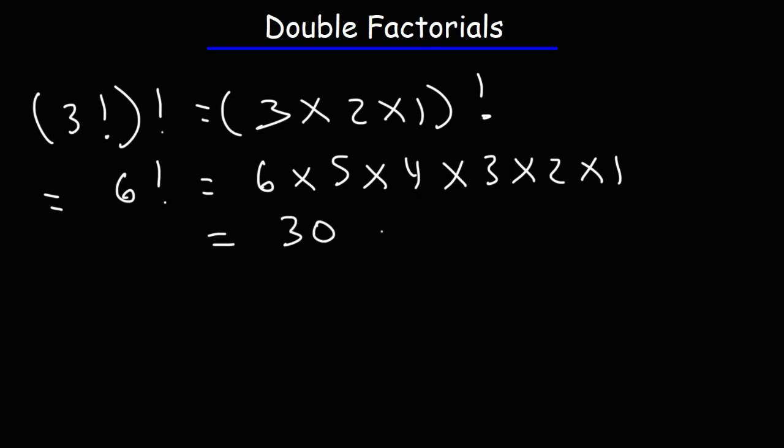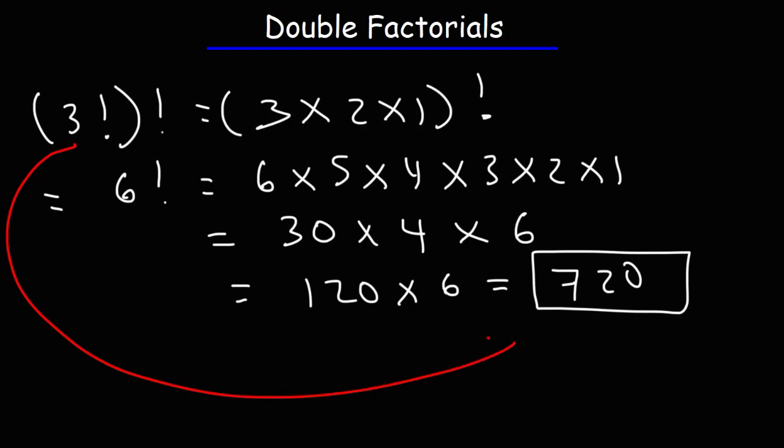6 times 5 is 30. 3 times 2 is 6. 30 times 4 is 120. And 120 times 6. 12 times 6 is 72. So 120 times 6 is going to be 720. So that's the value of the iterated factorial of 3.